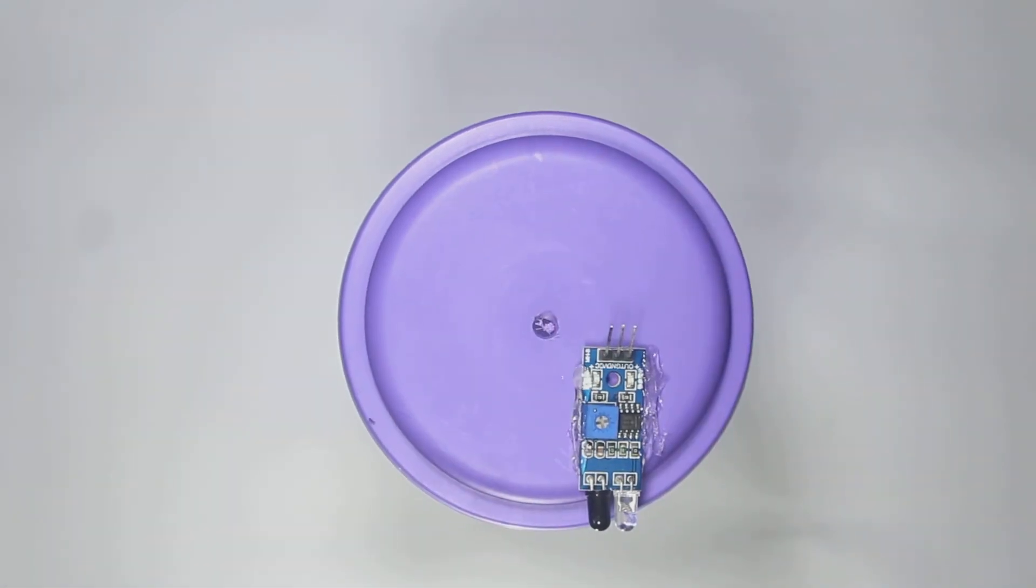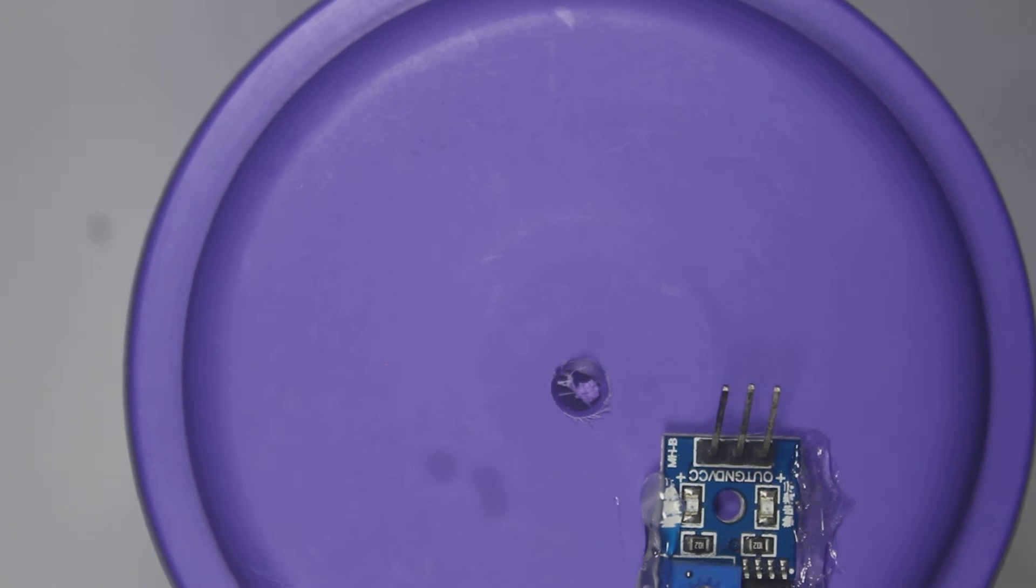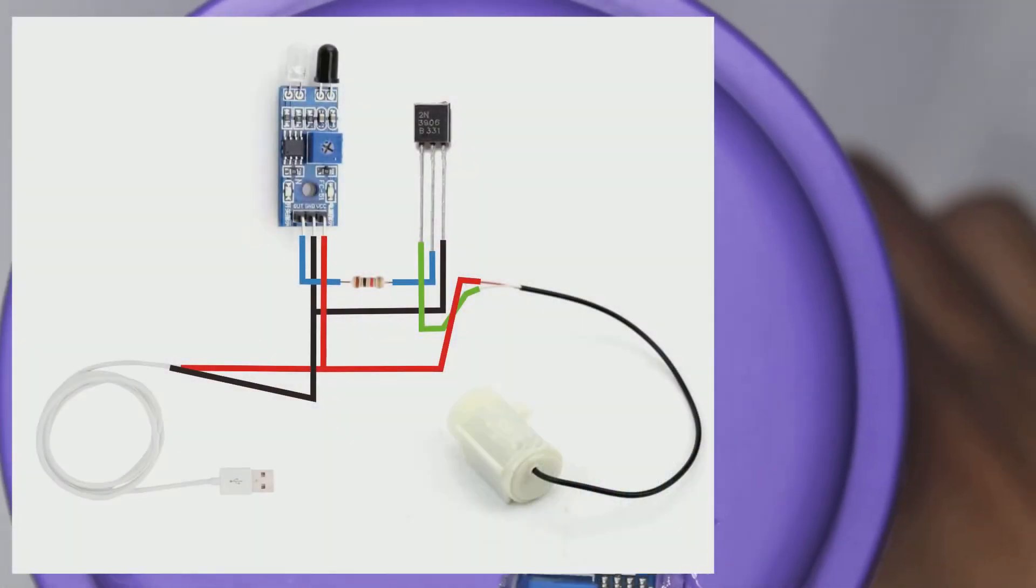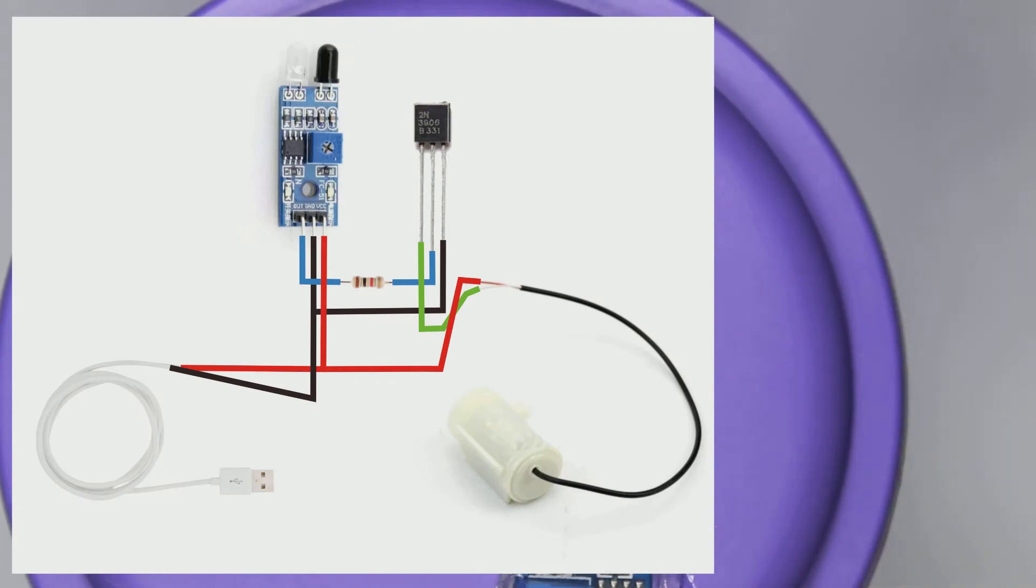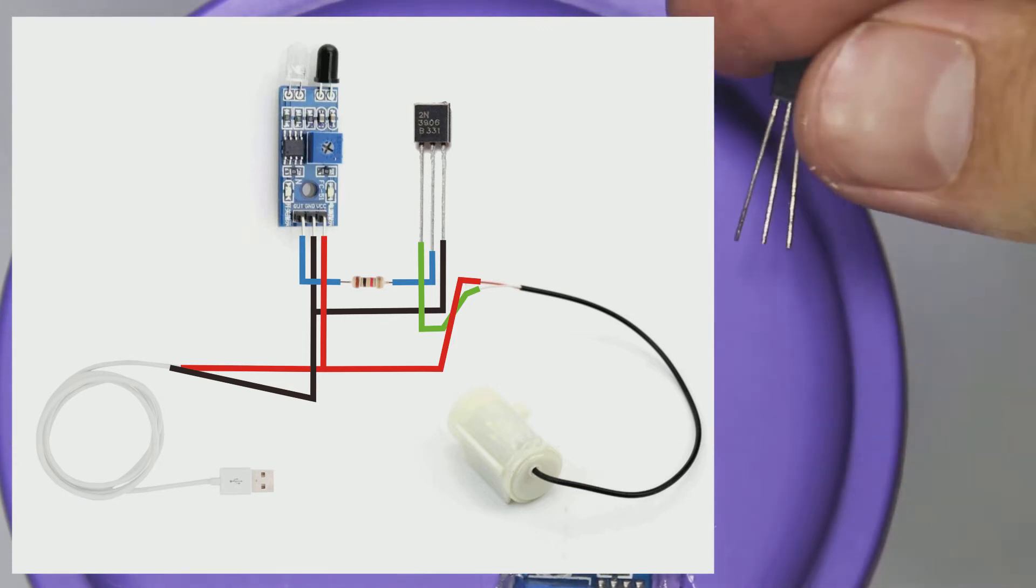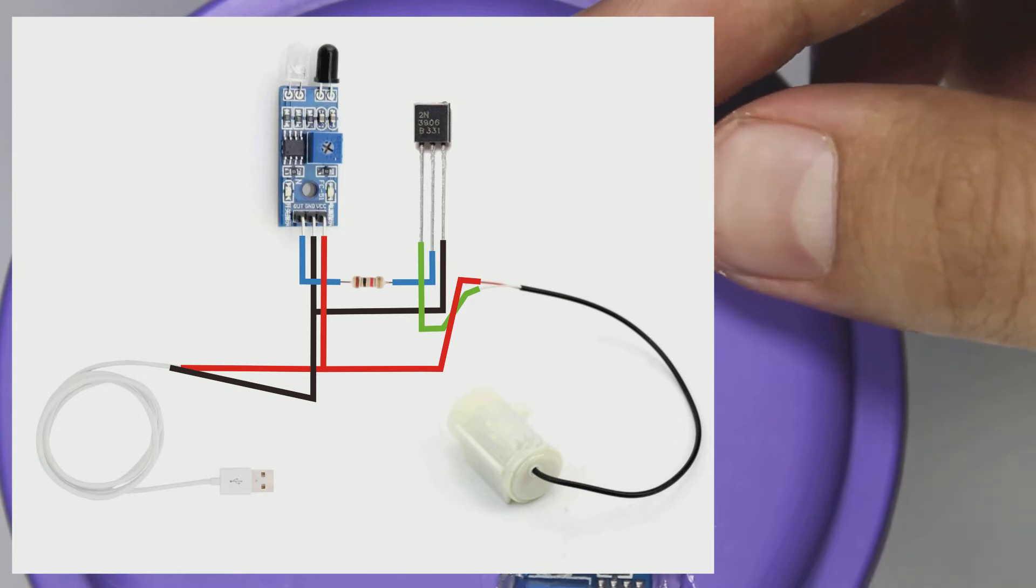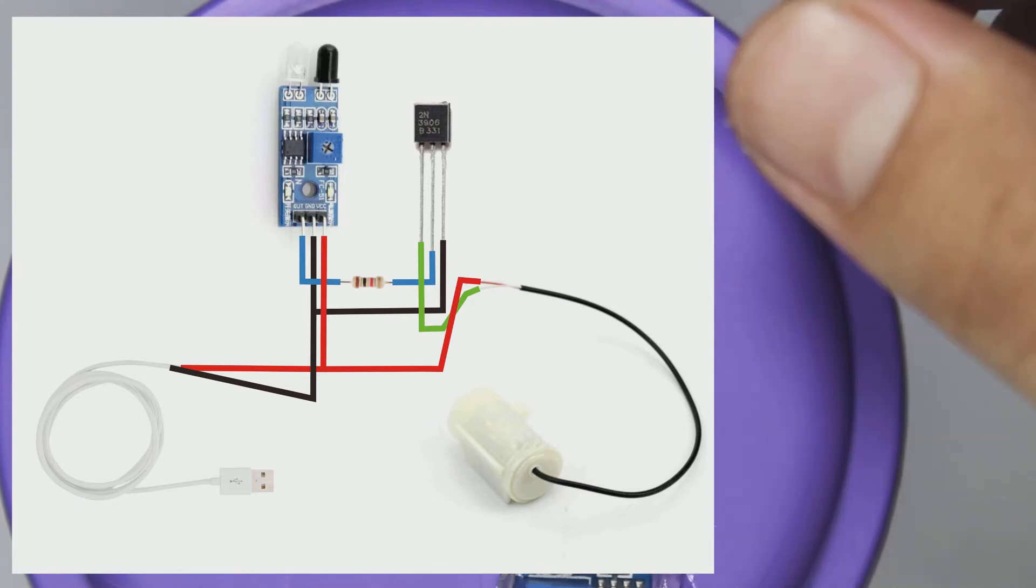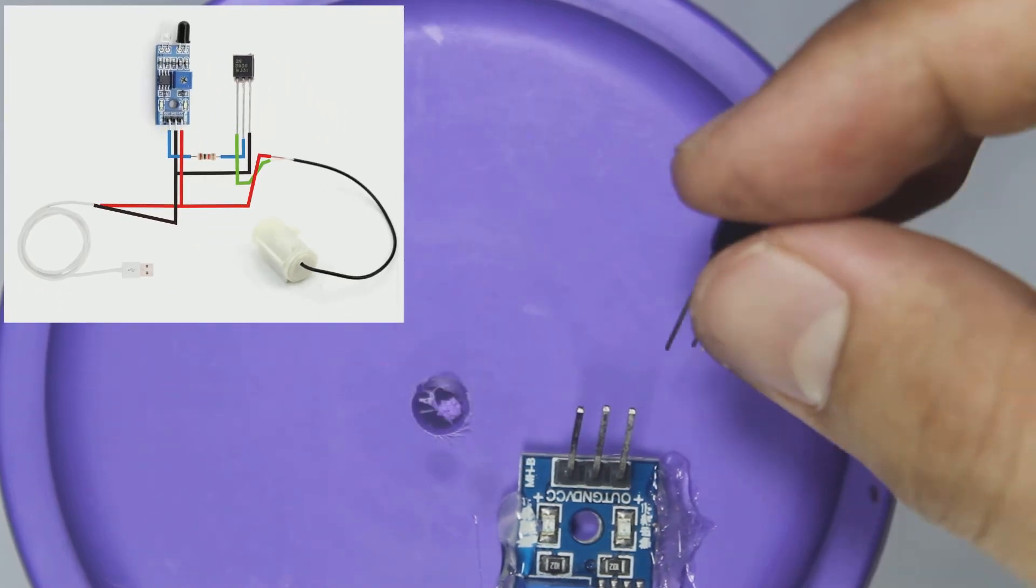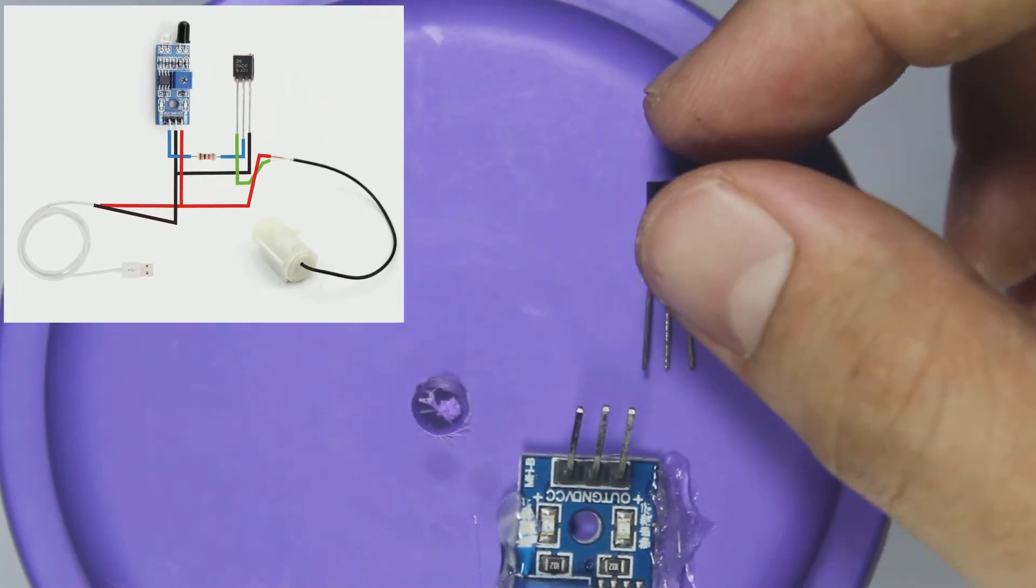After the glue dries, let's solder all electronics components to their position. Look at this simple wiring diagram. In this diagram we have USB cable from power source, photodiode sensor module, 1K ohm resistor, 2N3906 transistor, and the DC water pump. Make sure the curved transistor face is facing downward and the flat one is facing upward.